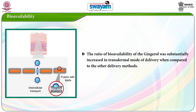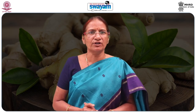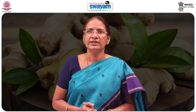Regarding bioavailability, the ratio of bioavailability of gingerol was substantially increased in transdermal mode of delivery when compared to other delivery methods. Gingerol is carried to reach the blood circulation by a specially optimized nanovesicle called an ultra-deformable vesicle, which can thus be used to penetrate drugs across biological permeability barriers such as the stratum corneum with much better releasing kinetics. In conclusion, we have studied the bioactive components of ginger, the chemistry of gingerol, and its digestion, absorption, metabolism and bioavailability.